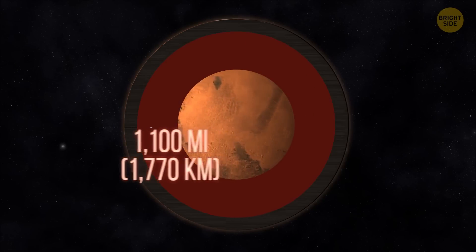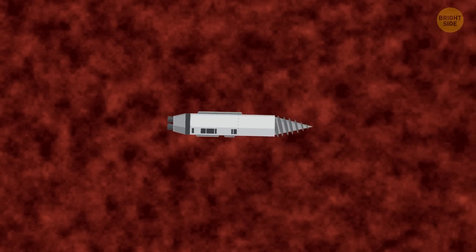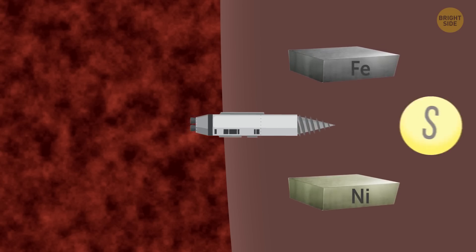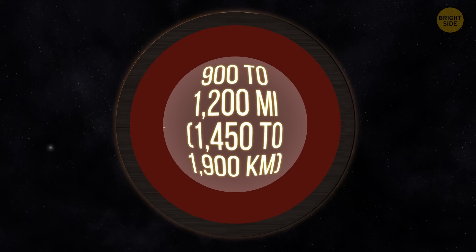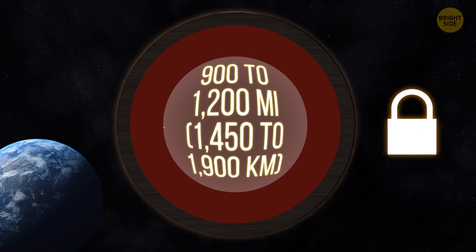The red planet's mantle is much thinner than Earth's. It's 1,100 miles thick, at most. You feel that the drill begins to move a bit differently. Ah, must be the core. It's made mostly of iron, nickel, and sulfur, and is between 900 and 1,200 miles across. And unlike Earth's core, it doesn't move.